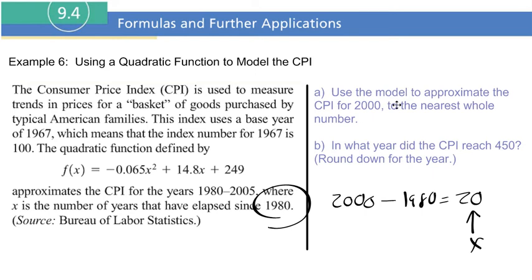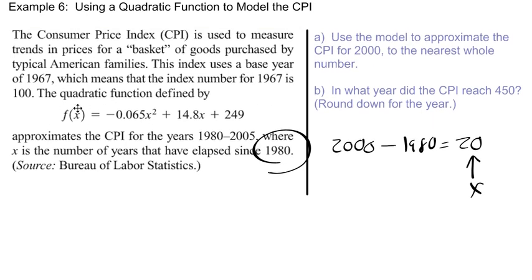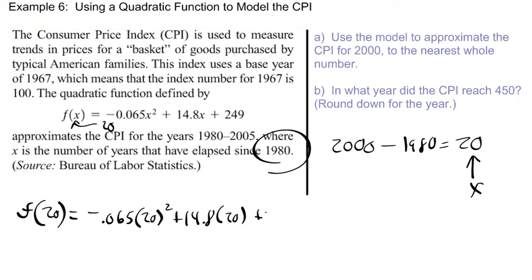Because x is the time that had elapsed since 1980. You start at 1980, and then whatever year that you want to get the approximate, you're going to subtract that from 1980. So 2000 minus 1980 is 20. That's what we're going to plug in to find the approximate CPI. The notation for that is f(20), meaning I'm replacing x with 20.